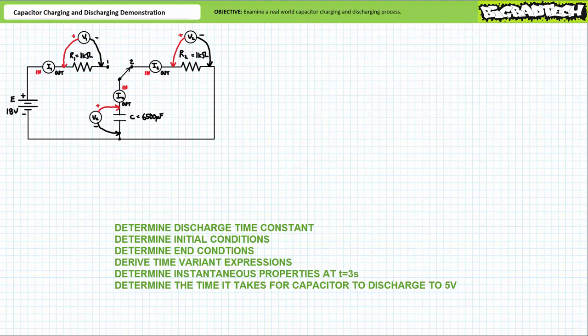Next, determine the initial values at the start of the discharge process for voltage across the capacitor, current through the capacitor, voltage across R2, and current through R2. Don't worry about the electrical properties for R1 during the discharge process since the knife switch in position 2 isolates R1. Then determine the final values at the end of the discharge process for those same elements after a full discharge of five time constants. Then see if you can determine the time-variant expressions for voltage across the capacitor, current through the capacitor, voltage across R2, and current through R2 during the discharge process.